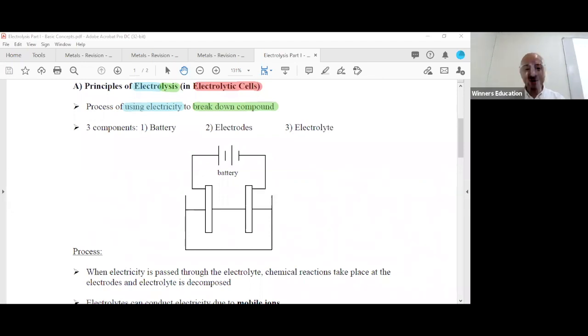There are three things you need in electrolytic cells: a battery to provide the electricity (or any power source which gives out electrons), something known as electrodes, and something known as electrolyte. On the diagram I'll give a little white space because later we're going to draw things inside here.